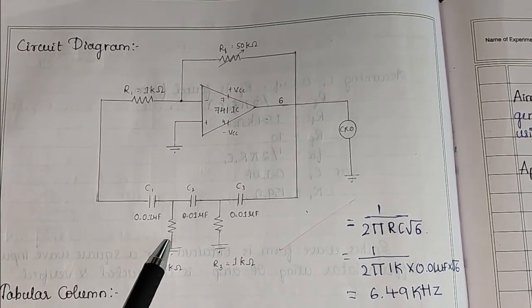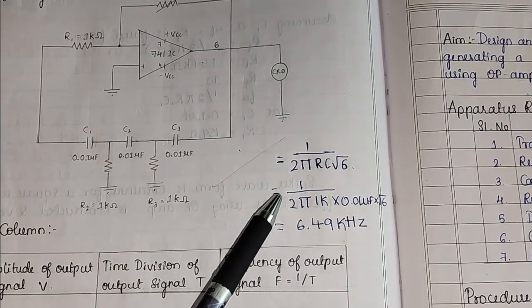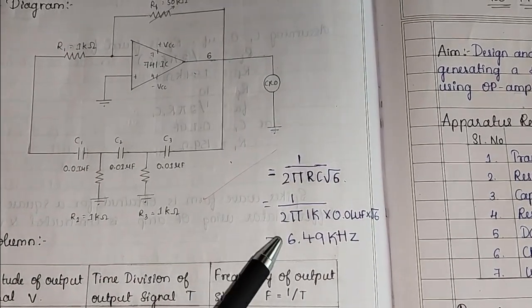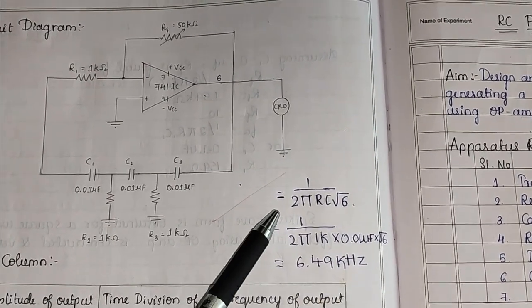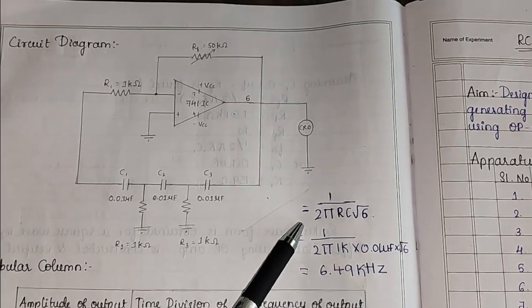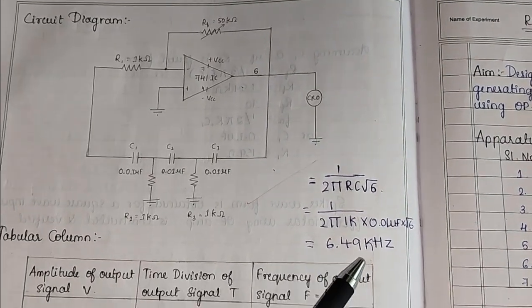Based on this value whenever we calculate the oscillation frequency with this formula that turns out to be 6.49 kilohertz. This is the formula of frequency in RC phase shift oscillator. When we submit these values we will get this frequency.